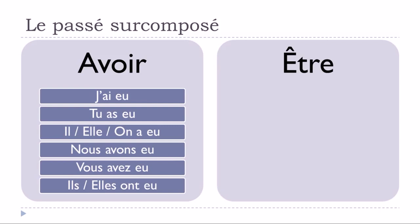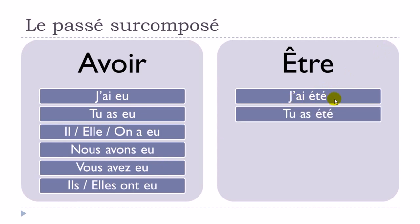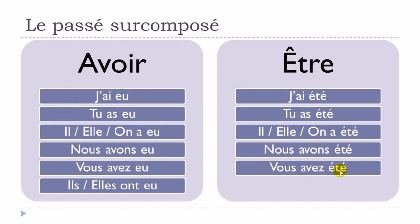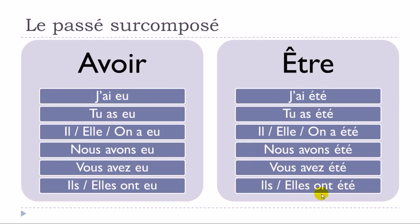Être at the passé composé: j'ai été, tu as été, il/elle/on a été, nous avons été, vous avez été, ils ont été, elles ont été. This will be the first part of your passé surcomposé for the exceptions — the verbs that require être.